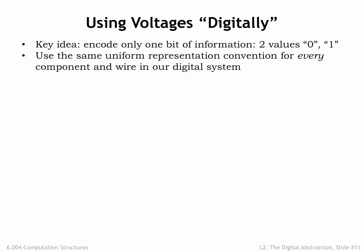The key idea in using voltages digitally is to have a signaling convention that encodes only one bit of information at a time — in other words, one of two values, 0 or 1. We'll use the same uniform representation for every component and wire in our digital system.